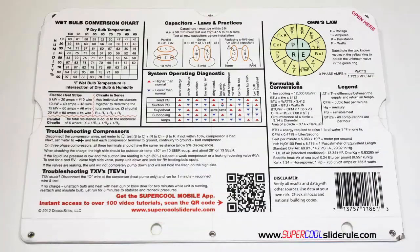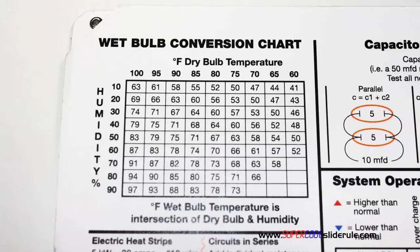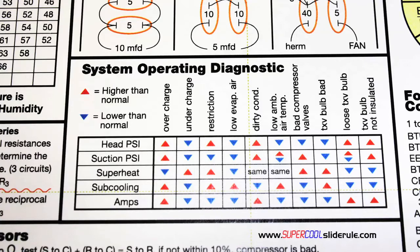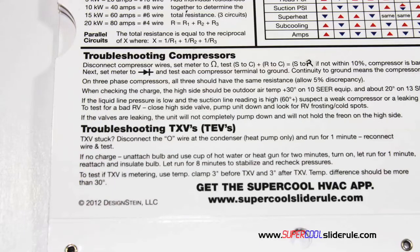The back cover contains required formulas, it has capacitor rules and practices, a wet bulb conversion chart, how to perform computations on series or parallel circuits, an electric heat strip guide, a complete system troubleshooting diagnostic chart, and how to troubleshoot compressors and TXV.